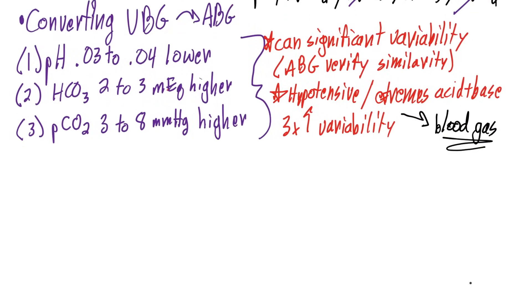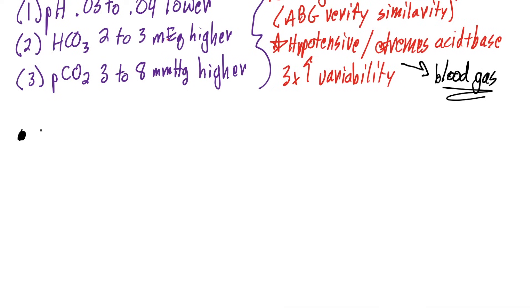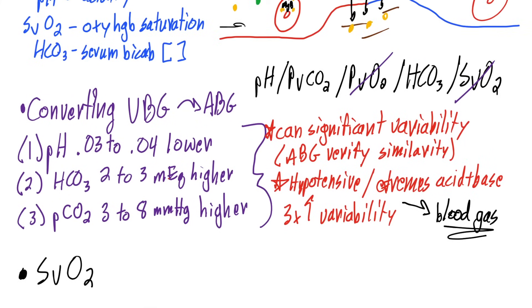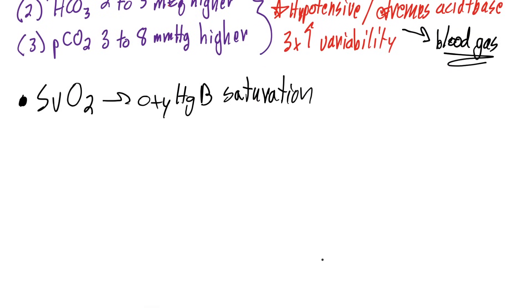Usually you can use a VBG for pH and PCO2 in place of an ABG, although you have to understand there is significant variability. If it doesn't add up, get an ABG to verify your VBG is comparable. I do just want to touch on SVO2 and what that means. The SVO2 is the oxyhemoglobin saturation—how much oxygen is on hemoglobin. SVO2 is part of a VBG that is not used to translate to an ABG. It's a part of the VBG that you actually need a VBG to get. In the arteries, you have an arterial saturation of oxyhemoglobin that's usually 95% to 100%.